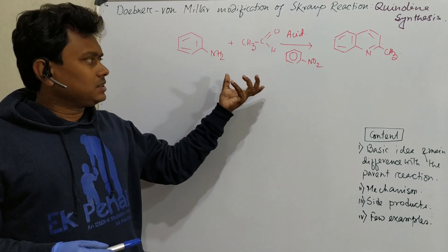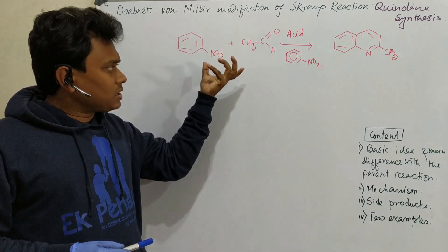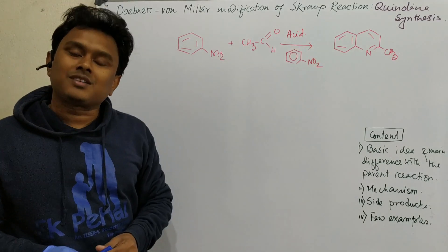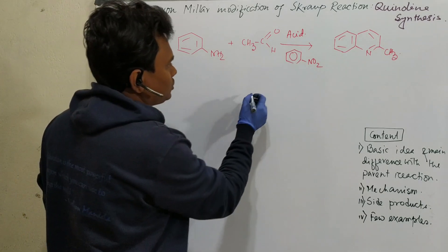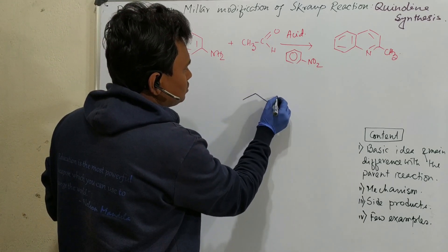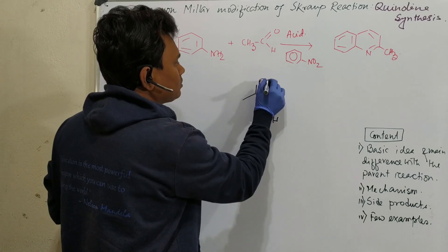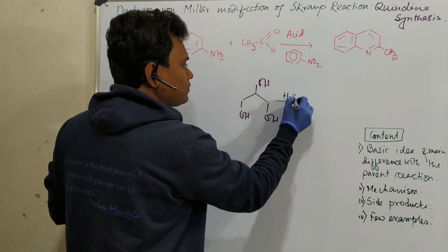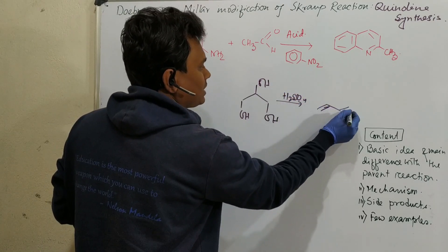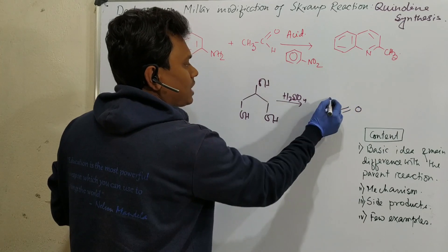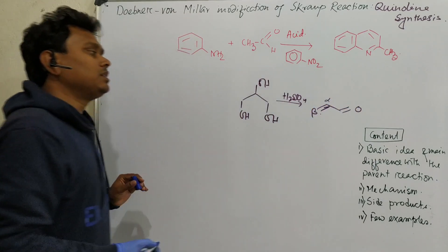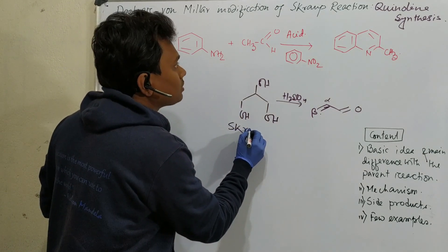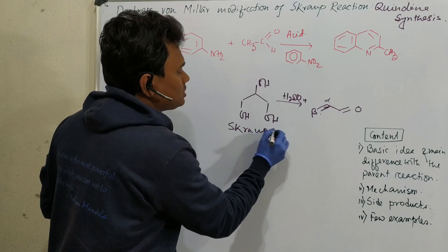As you can see this method is a modification of Skraup reaction. So question is what Skraup reaction actually is? Skraup reaction actually uses glycerol which is converted in presence of concentrated sulfuric acid under heating condition to acrolein. So it's alpha beta unsaturated aldehyde. So this is the Skraup reaction.